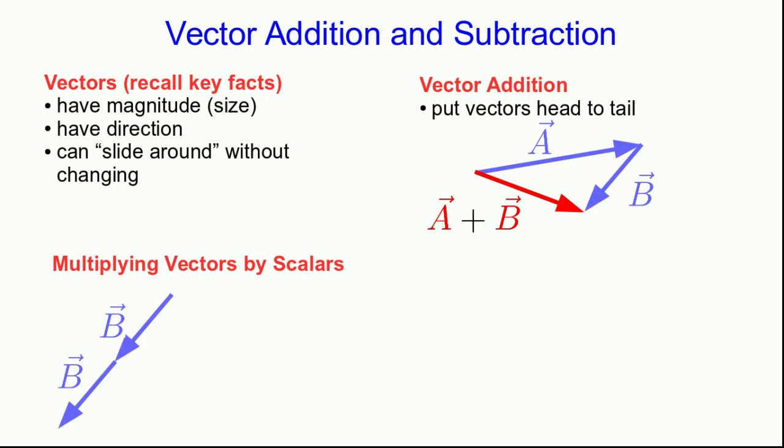And it's easy enough to see how it works. Suppose we take B and add it to itself. Then we get 2B, but that's just the same as multiplying B, the vector B, by the scalar 2. And so we see all that happens when we multiply a vector by a scalar, is that we change its length. We rescale it.